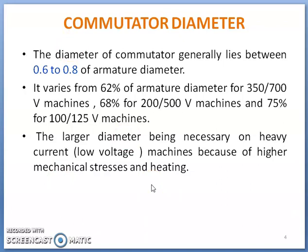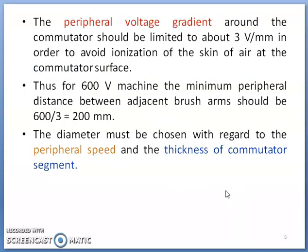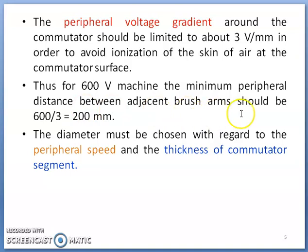Machines can be designed for high voltage–low current or high current–low voltage applications depending on the winding type, and the commutator diameter may exceed 0.6–0.8 of armature diameter in such cases. The peripheral voltage gradient around the commutator should be limited to about 3 volts per mm to avoid ionization of air at the commutator surface. For a 600-volt machine, with a gradient of 3 V/mm, the minimum peripheral distance between adjacent brush arms should be 200 mm.